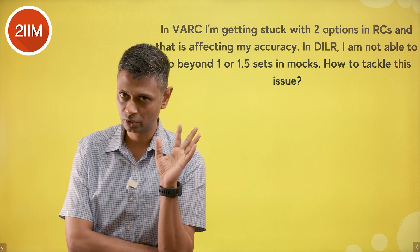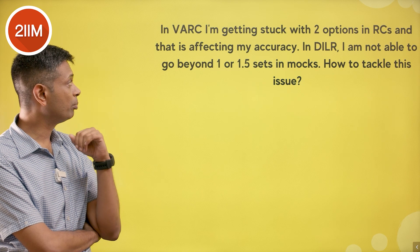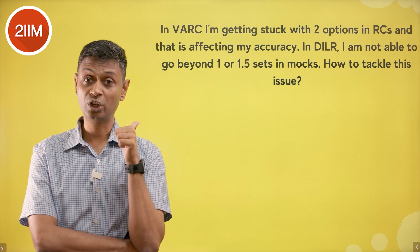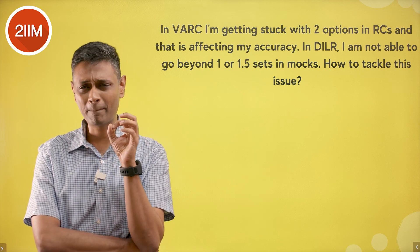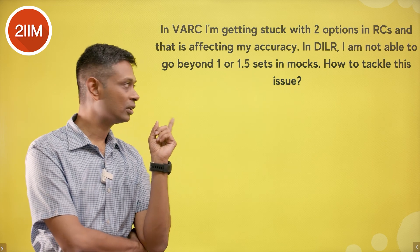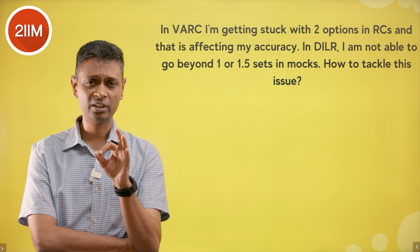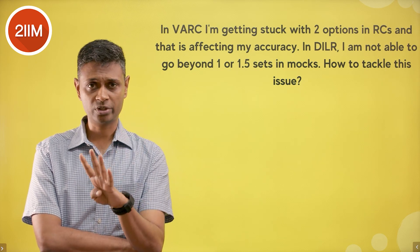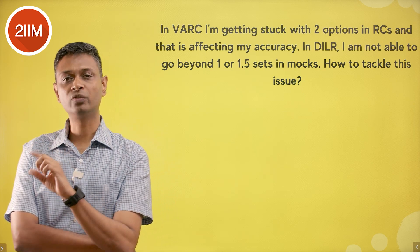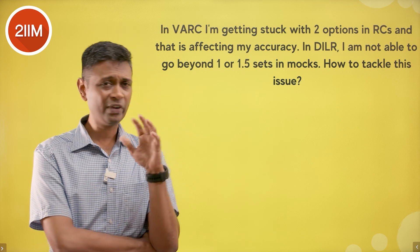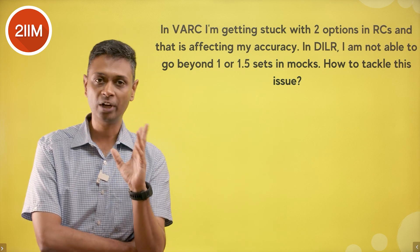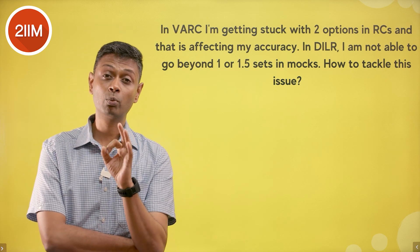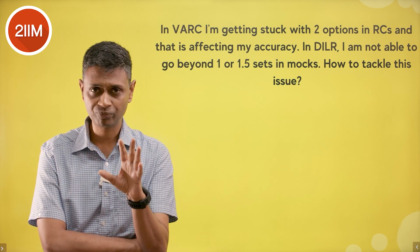On not being able to go beyond one or one-and-a-half sets in LRDI mocks: the number one thing to nail is set selection. Make sure you are not getting drawn into the wrong set. Get one set — four questions — in the bag first, then build confidence to attempt one more. One to one-and-a-half sets consistently is not a nightmare. Six questions right = 18 marks.